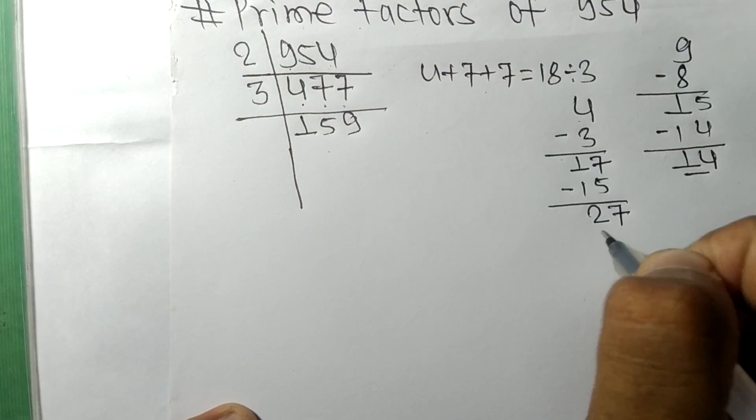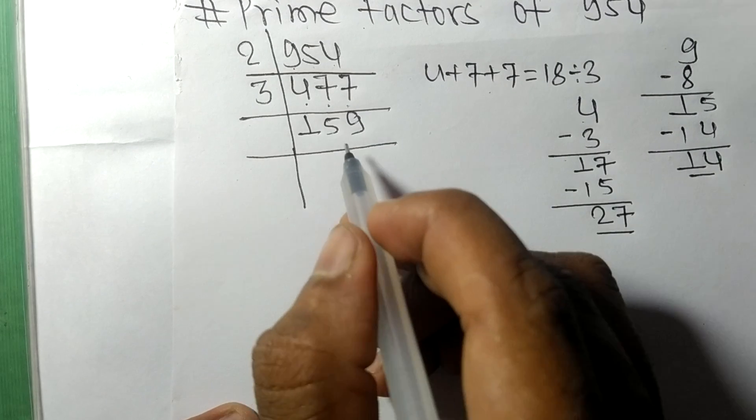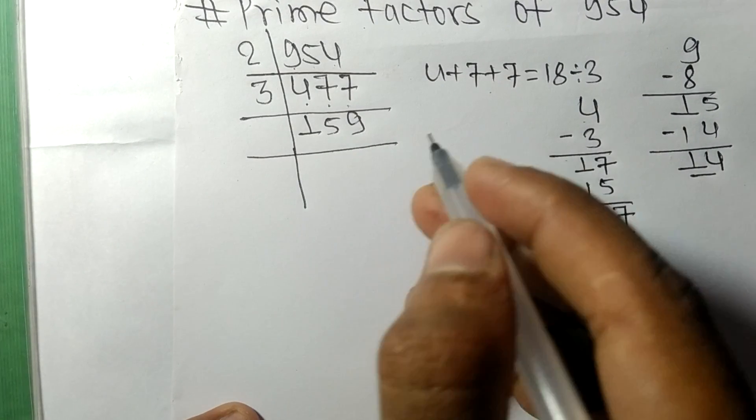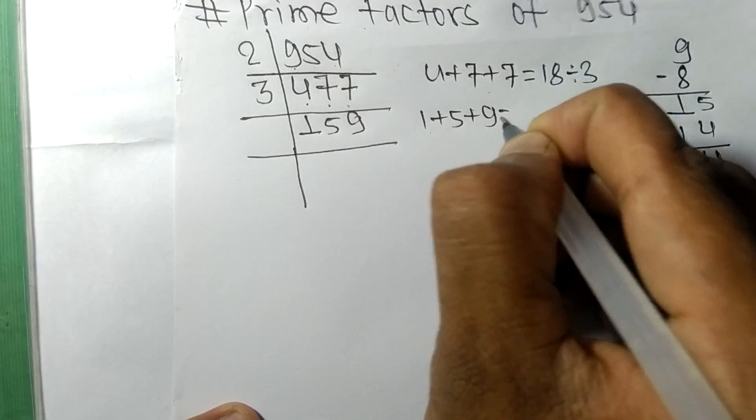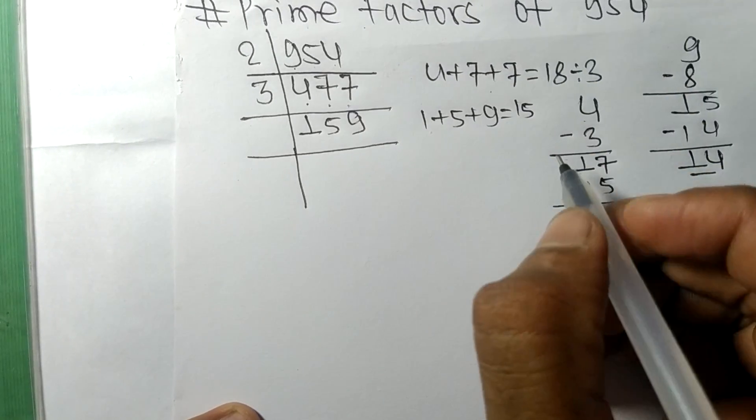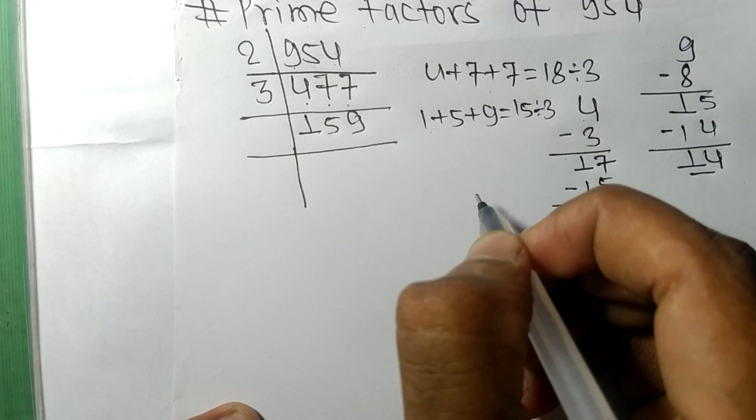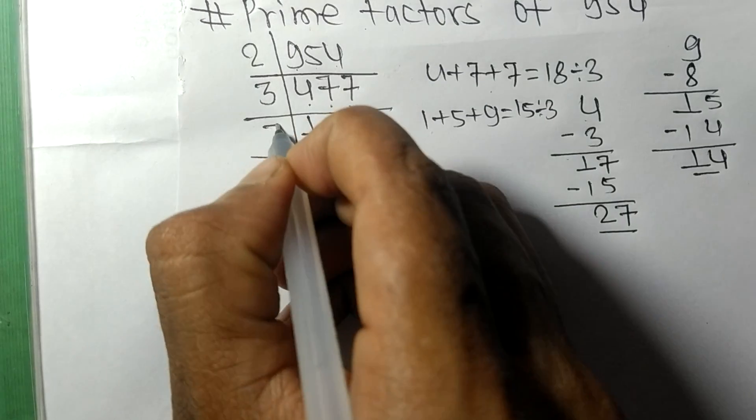So now we got 159. When we add all these numbers, that is 1 plus 5 plus 9, then we get 15. And 15 is exactly divisible by 3, so 159 is also divisible by 3.